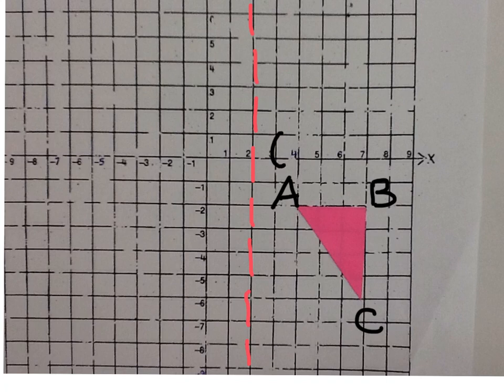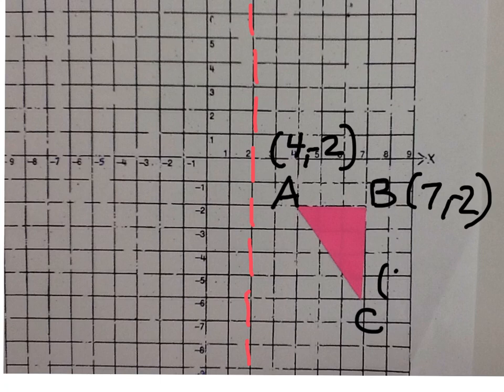So point A is now at x equals 4, y equals negative 2. B is at x equals 7, y equals negative 2. And C is x equals 7, y equals negative 6.